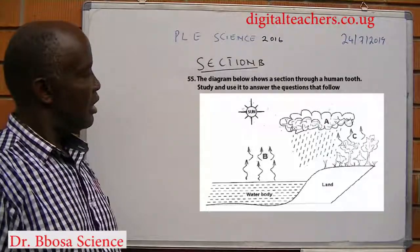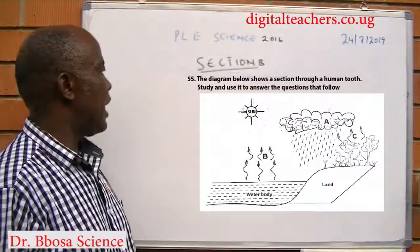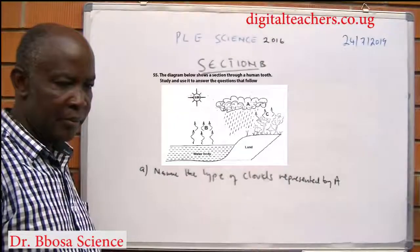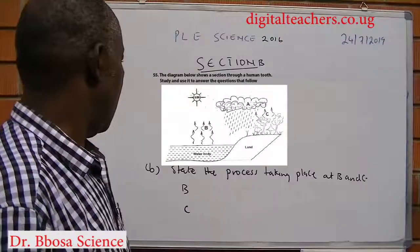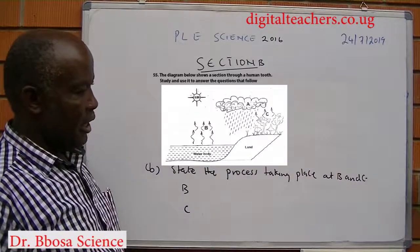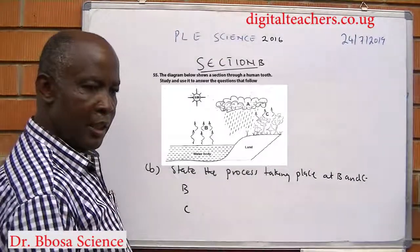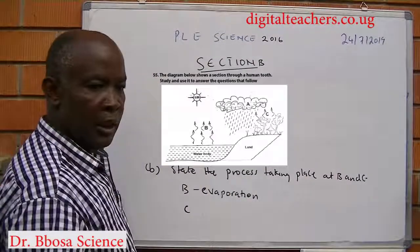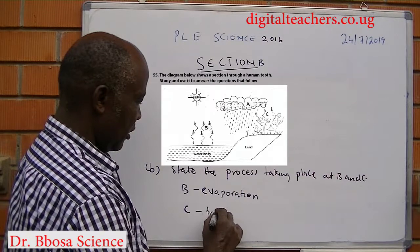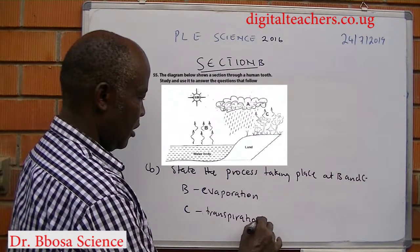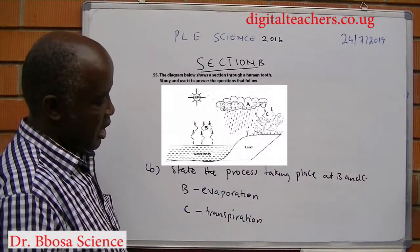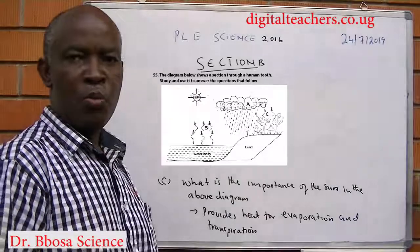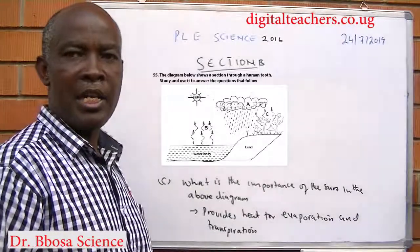Number 55: the diagram below shows a water cycle. Name the type of clouds represented by A — those are nimbus clouds. State the process taking place at B and C: B is evaporation, C is transpiration, which is the loss of water from the plant. State the importance of the sun in the above diagram: to provide heat for evaporation and transpiration.